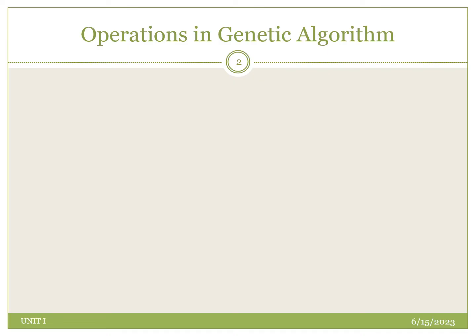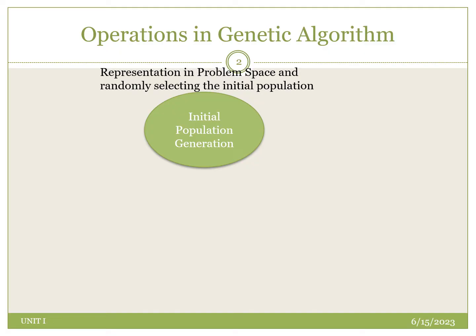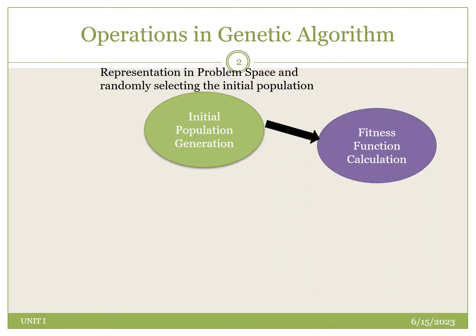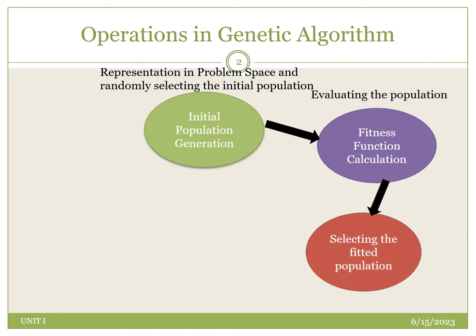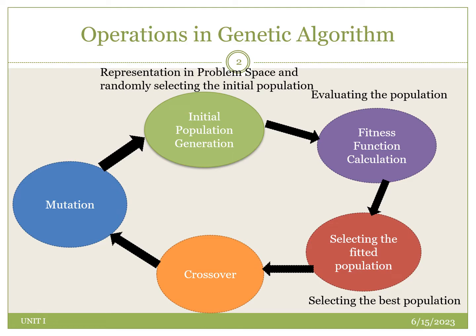Genetic algorithm is an evolutionary algorithm which involves a number of operations. The operations are: selecting the initial population randomly, evaluating the fitness of each selected population, selecting the best population, performing crossover by interchanging some of the genes, and then mutating. The new population again undergoes the same process — evaluating the fitness function, selecting the best population, and crossover. This is an iterative process that is repeated until we get the best solution.